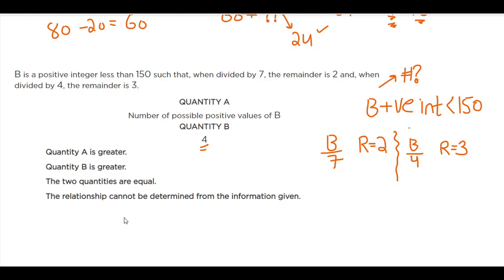Like for the first one, it's going to be seven times P plus the remainder two, which is going to be B. The divisor with a quotient plus the remainder, which is equal to the dividend. And the second equation is going to be four times Q plus three with another B.